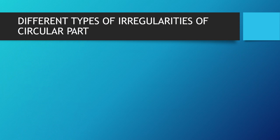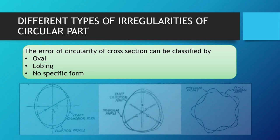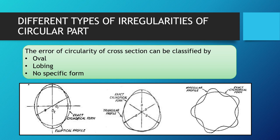The error of circularity of a cross section can be classified as ovality, lobbing, and no specific form. Ovality is defined as when there is a difference between the major and minor axes. Lobbing is particularly difficult to avoid in machining operations such as centerless grinding. It is defined as a deviation from roundness produced on a centerless machine, where even when perfectly ground, stresses at the point of contact get relieved and lobes form. It is an unintentional form of error from a centerless grinding operation.